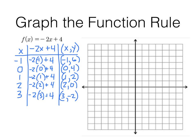Now let's plot those points on the coordinate plane. The pattern continues — for x = 4, y would be -4; for x = 5, y = -6. Then you draw the line connecting all the points, put little arrows on each end, and you're done graphing a function rule. That's a lot of information — come in ready to answer vocabulary questions so you know you know it. See you in class.